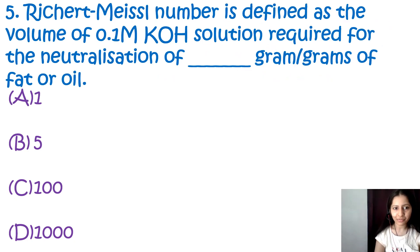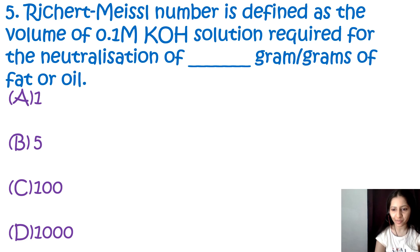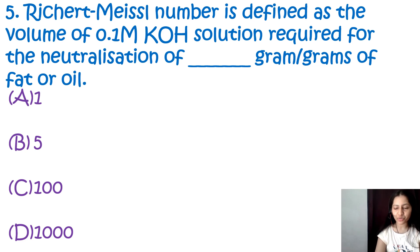Question number 5: Reichert-Meissl number is defined as the volume of 0.1 molar potassium hydroxide solution required for the neutralization of how many grams of fats and oils? We just discussed this definition, so the correct option is B, that is 5 grams.